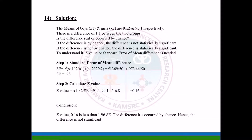The means of boys x1 and girls x2 are 91.2 and 90.1 respectively. There is a difference of 1.1 between these two groups. Is the difference real or occurred by chance? If the difference is by chance, it is not statistically significant. If the difference is not by chance, it is statistically significant. To understand this, the z value or standard error of mean difference is needed.